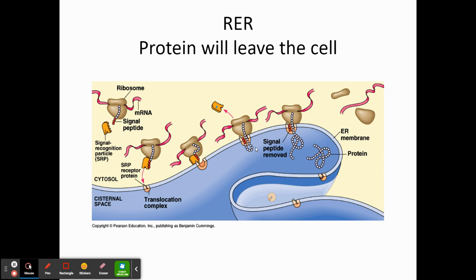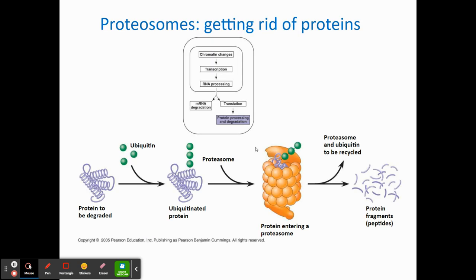If the messenger RNA goes to a ribosome on the rough endoplasmic reticulum, that protein is most likely bound for somewhere other than the cell interior — the cell membrane or completely outside the cell. Once translated inside the RER, the different environment can lead to different folding, and the polypeptide might be added onto or cut into pieces. Lots of different modifications can happen as it travels through the Golgi apparatus before going to the cell membrane or leaving the cell.